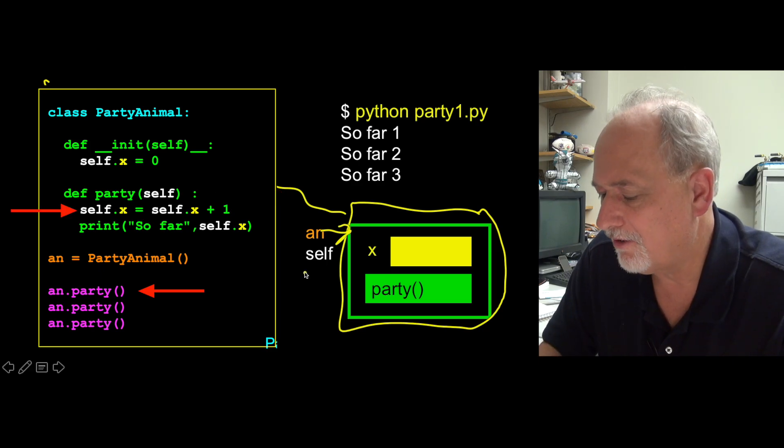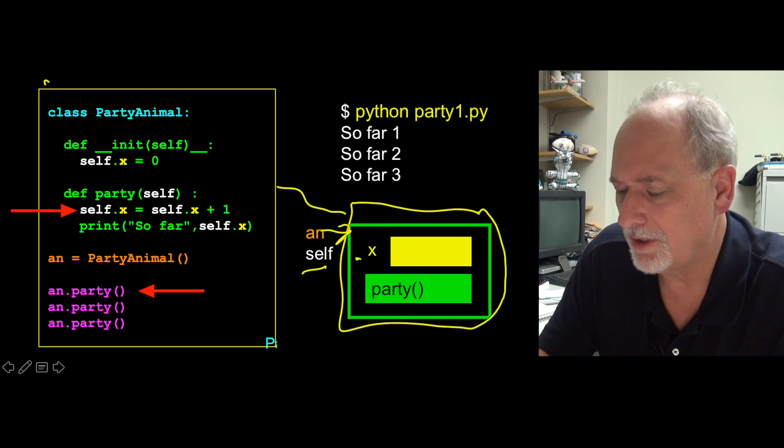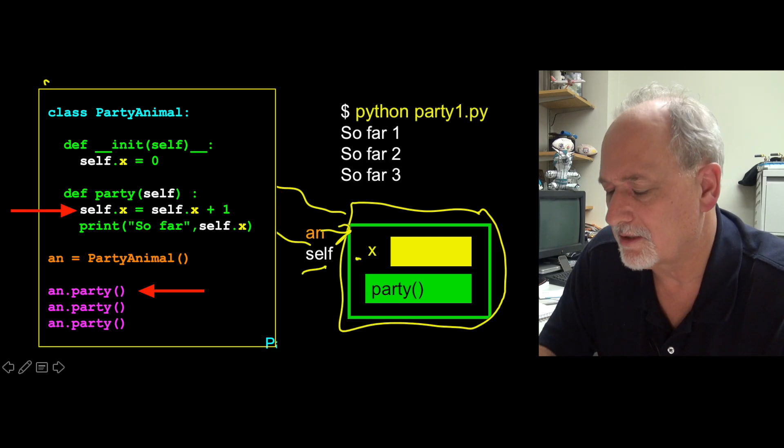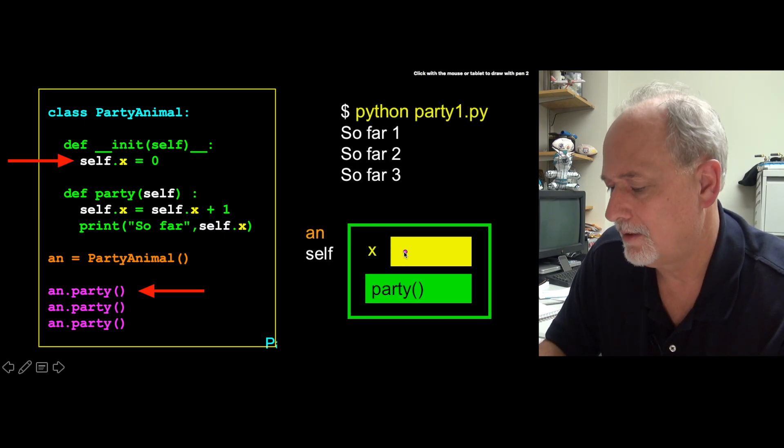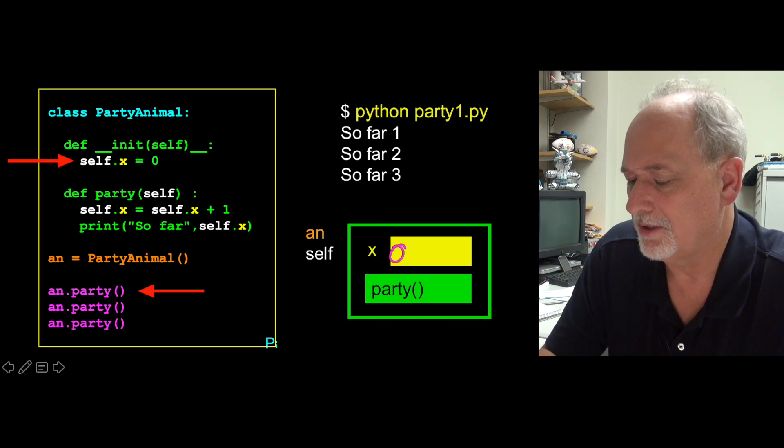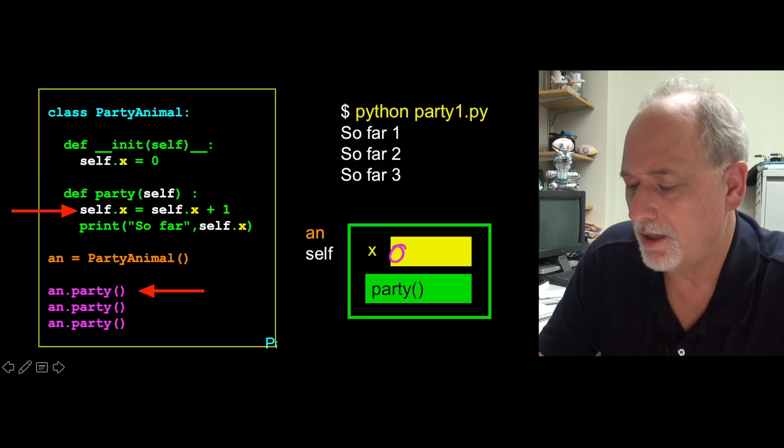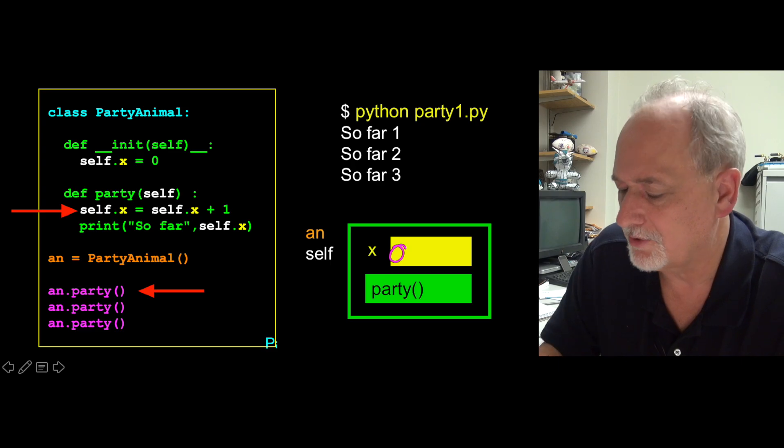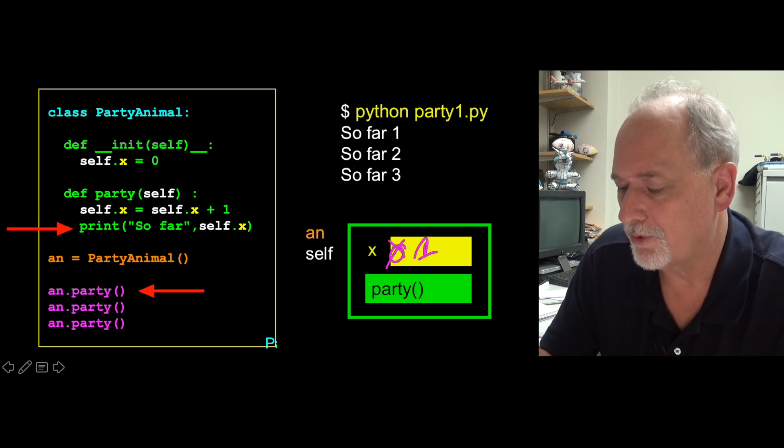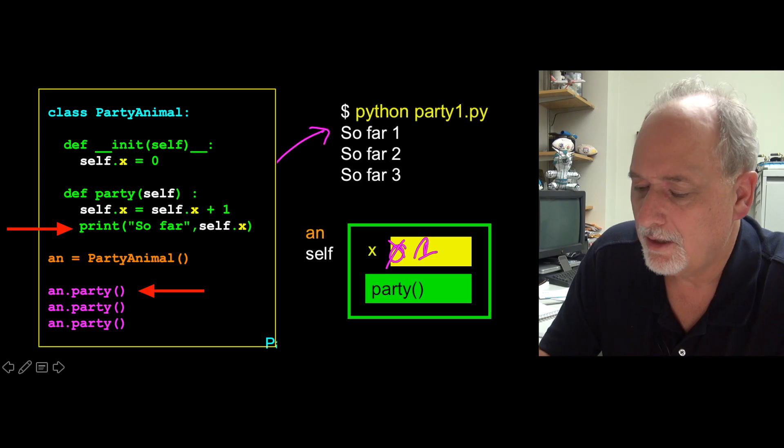And so self.x, which is what we're doing in this line right here. Self.x is a variable. X starts out as zero. X starts out as zero. Because when it was constructed it was set to zero. So we're in here. An is an alias of self. And now it looks up self.x, which is zero, adds one to it. And so this becomes one. And then we print so far, so far one. And then the code returns and it goes down and does it again.